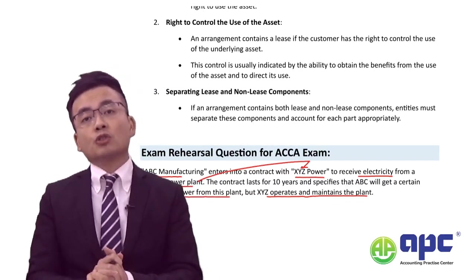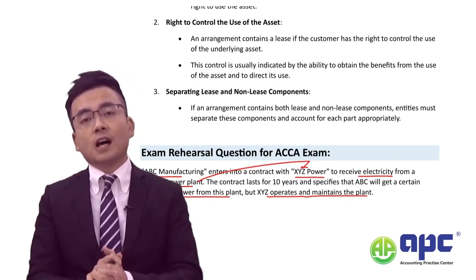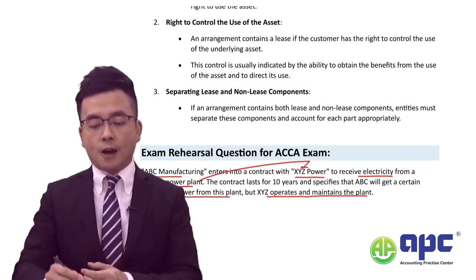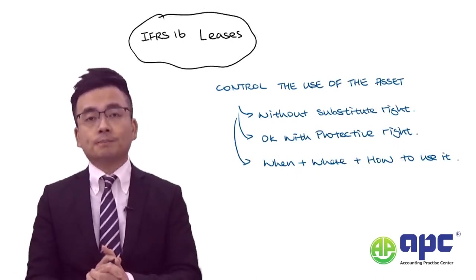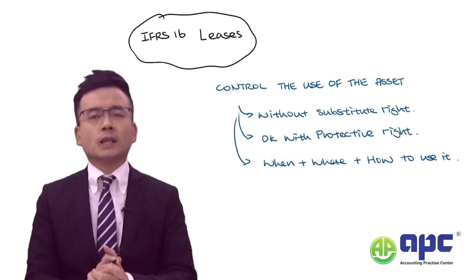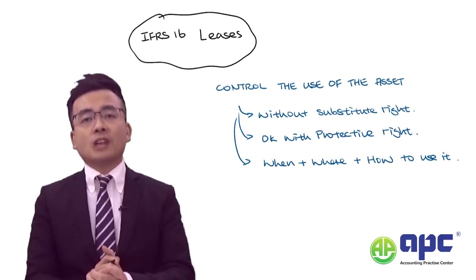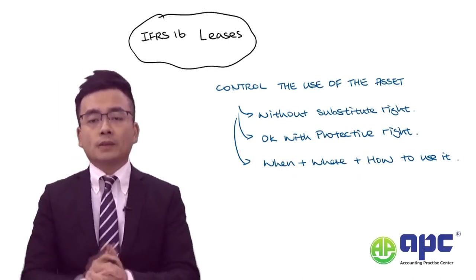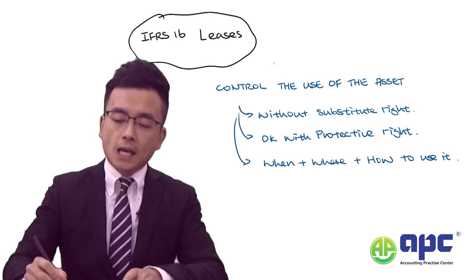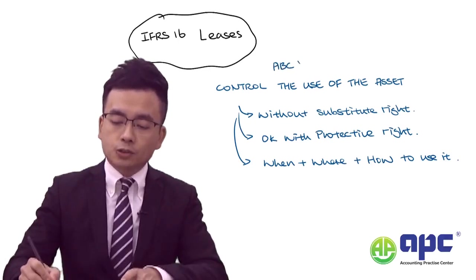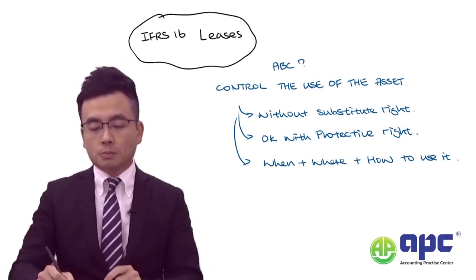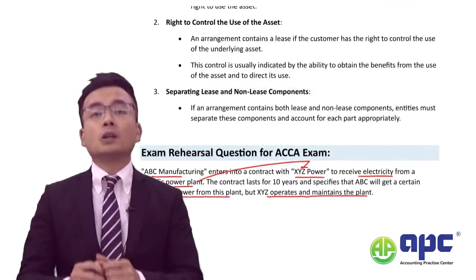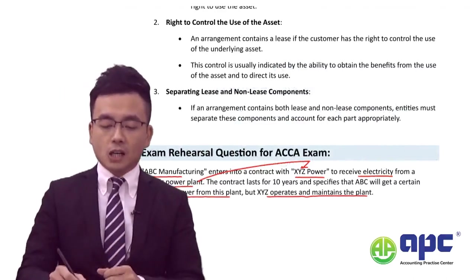Given this arrangement, we need to determine whether we should treat this as a lease contract according to IFRS 16 Leases. The answer depends on whether ABC can control the use of the plant — which means control of the asset itself.